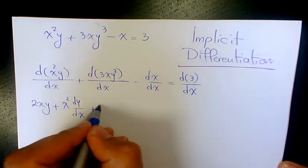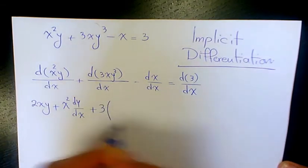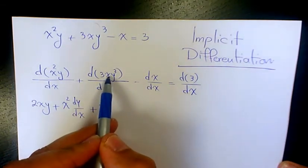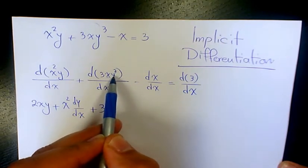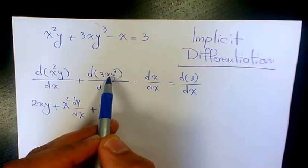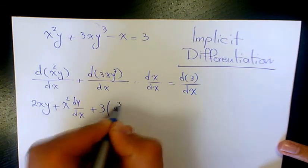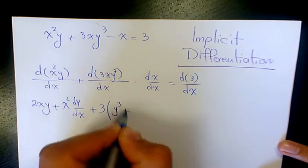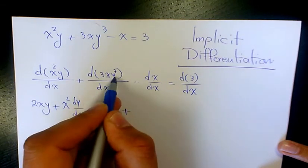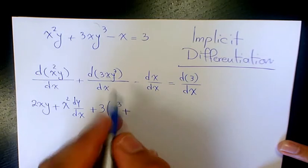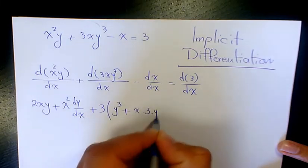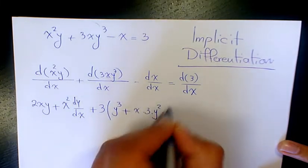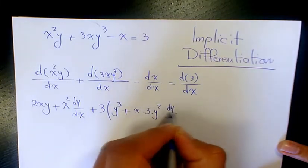Here we have 3 times xy cubed, so again we need to use the product rule. The derivative of x is 1 times y cubed, which is just y cubed, plus x times the derivative of y cubed, which is x times 3 times y squared times dy over dx.